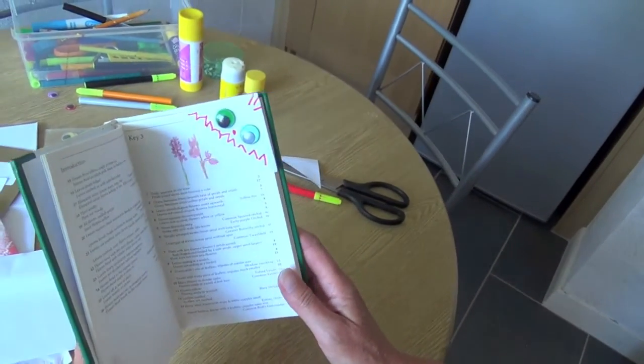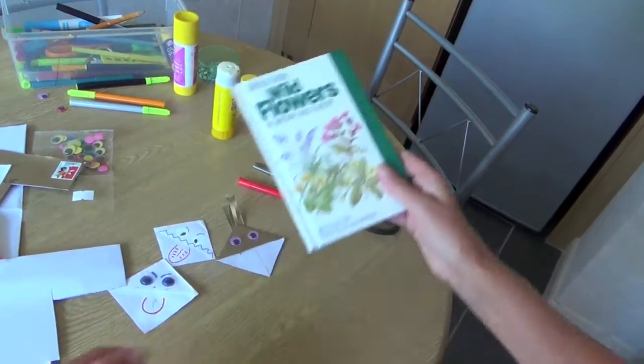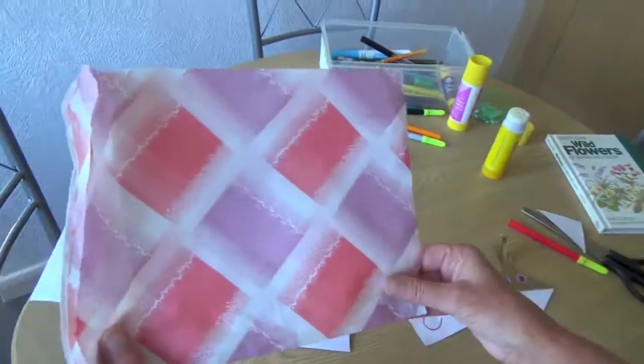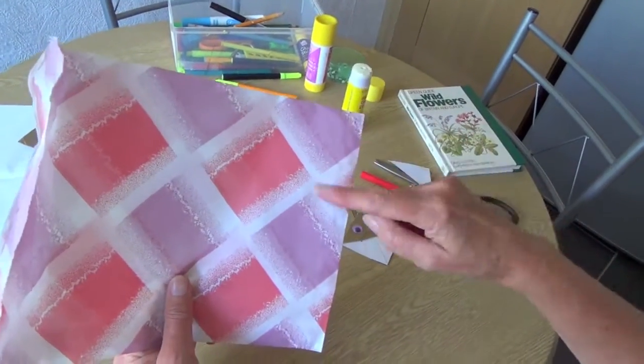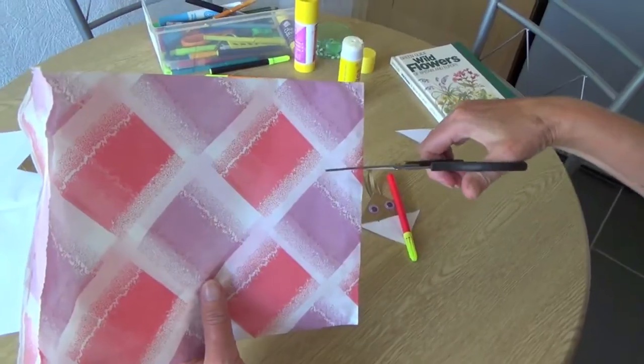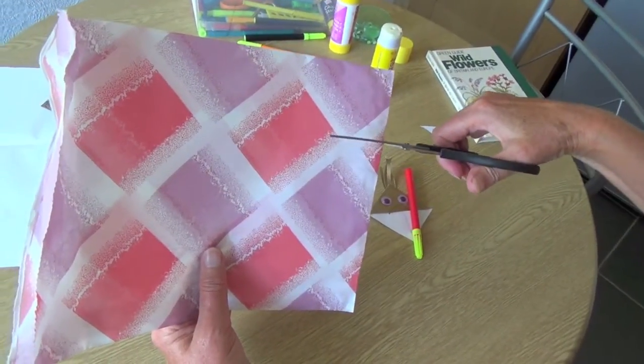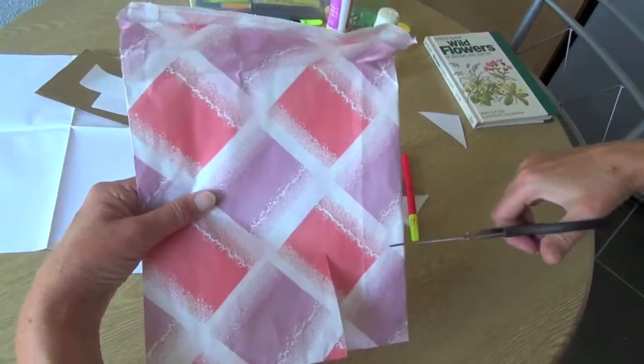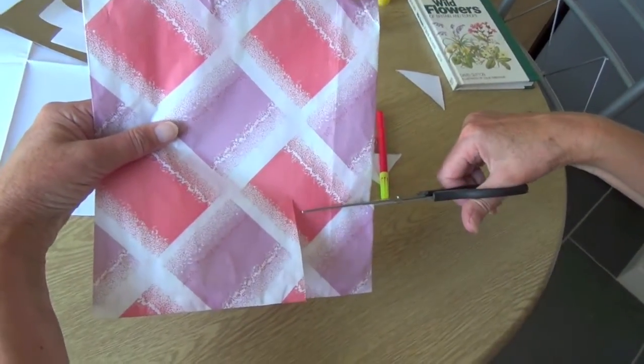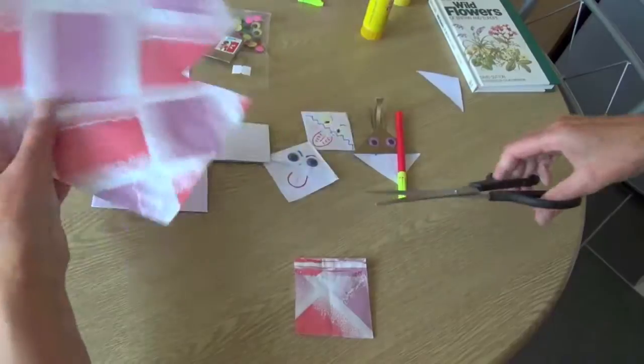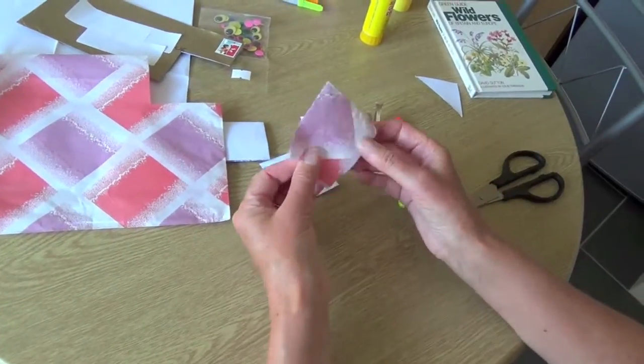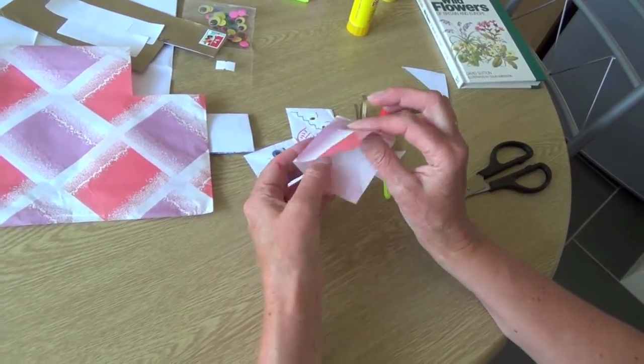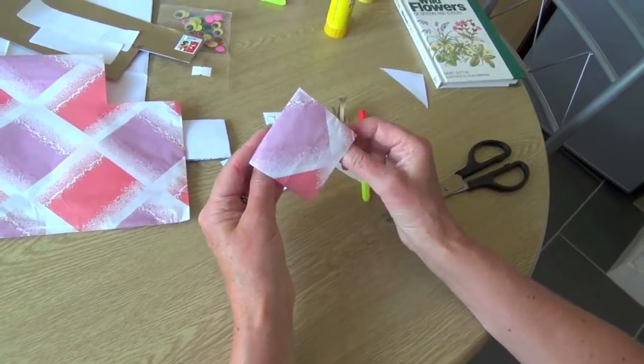Now if you want to do it with a paper bag you simply get the closed end and you would cut that out the same. So you could make a big one, small one, wherever you want. Cut roughly across there. Try and make it square. And then you've got the same idea. You've got this little pocket which you cut out and decorate.